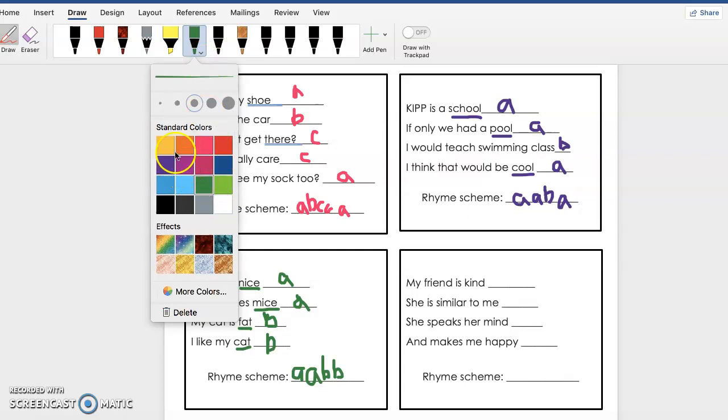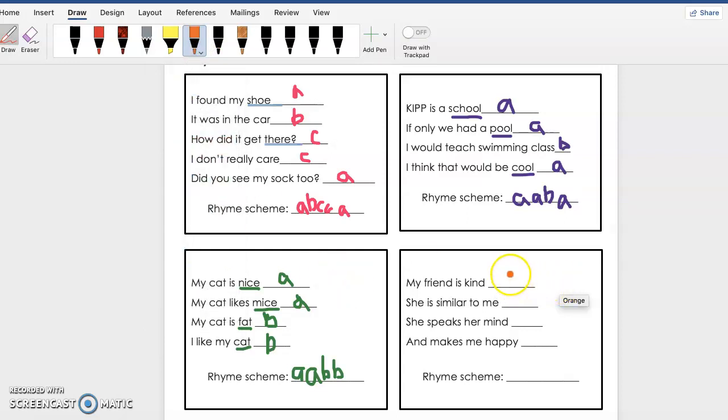Alright, let's use a different color. Let's use orange. My friend is kind. Okay, we're putting A. Remember, we always start off with A. She is similar to me. Me does not rhyme with kind, so we're going to continue with the alphabet and give it a B. She speaks her mind. Kind and mind rhyme, so I'm giving it an A. It makes me happy. So me and happy rhyme, and so I give it a B. This is probably one of the most basic patterns in a rhyme scheme, and so it would be A-B-A-B.